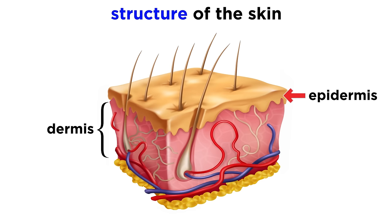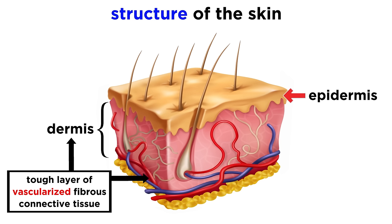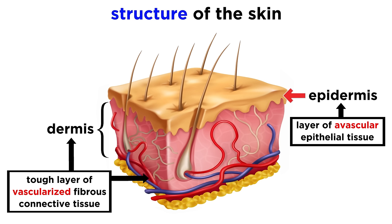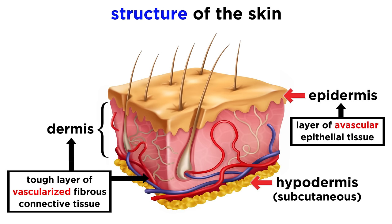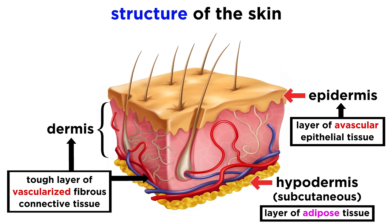The dermis, which is a tough layer of fibrous connective tissue, is vascularized, getting its nutrients from the bloodstream. The epidermis, which is made of epithelial tissue, is avascular, so it gets nutrients by diffusion through the tissue fluid from the dermis. In addition, below the dermis is the subcutaneous layer, also called the hypodermis. This is made predominantly of adipose tissue, and it anchors the skin to other structures below.